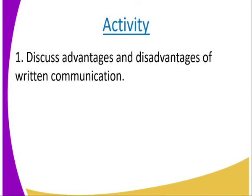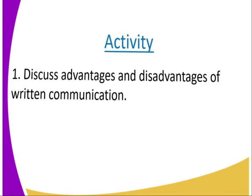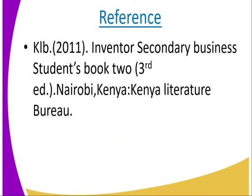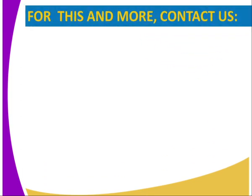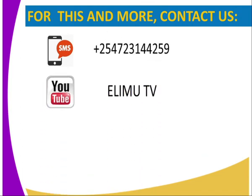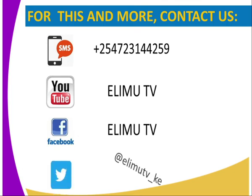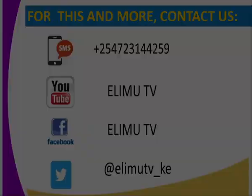Activity: Discuss the advantages and disadvantages of written communication. For reference, you can use the KLB 2011 Inventor Secondary Business Student Book 2, third edition. If you have any questions or areas you have not understood, you can reach us through SMS, YouTube, Facebook, or Twitter. Stay tuned to Elimti.